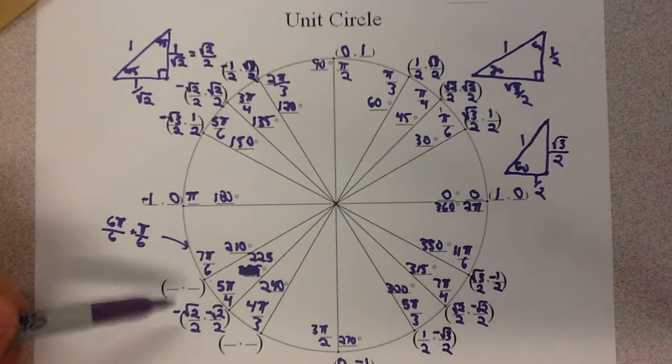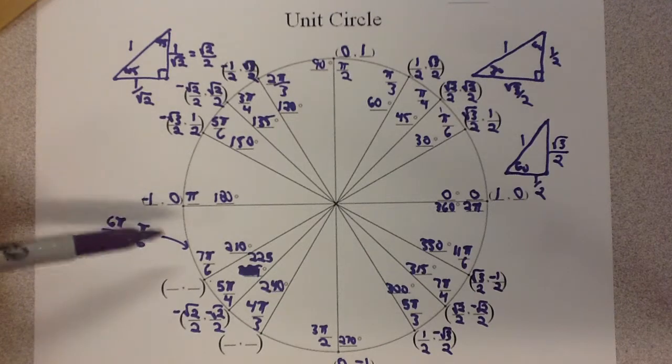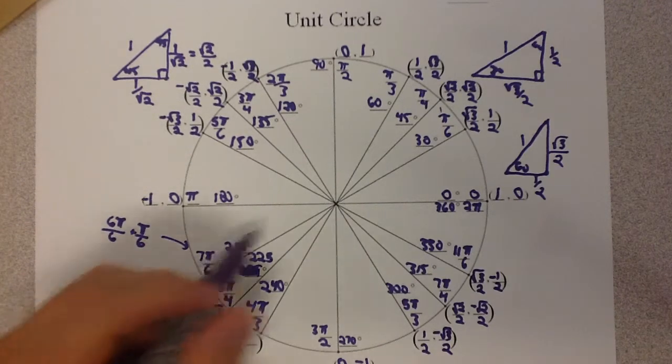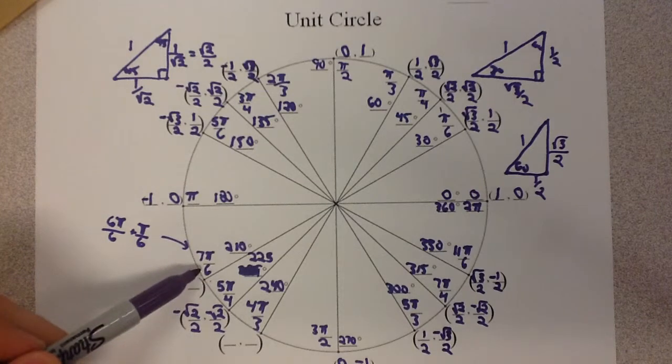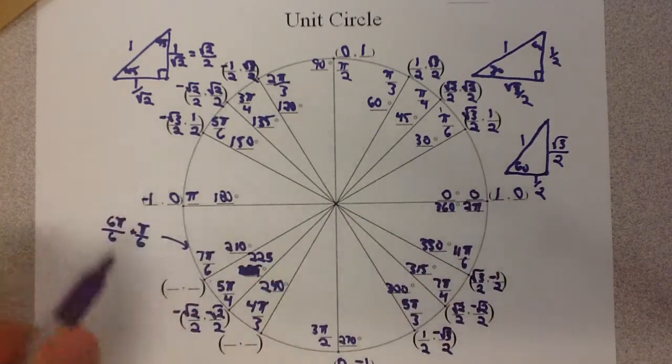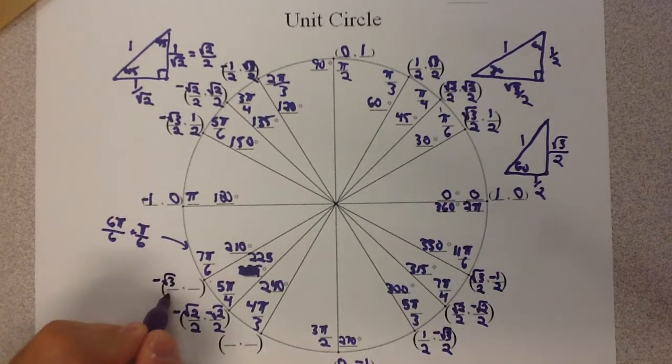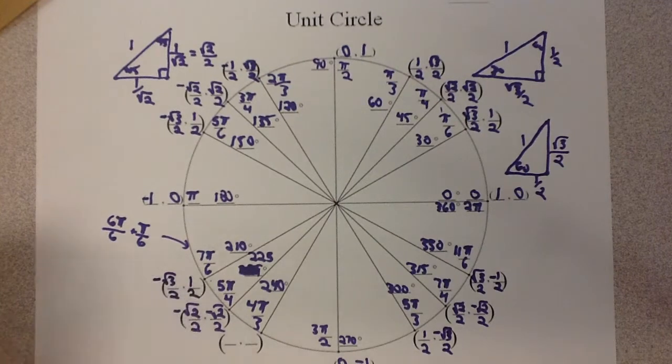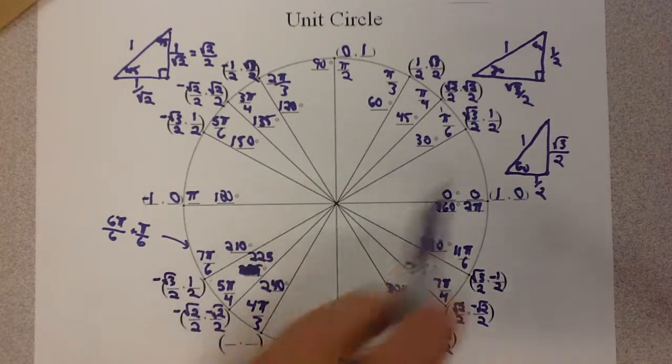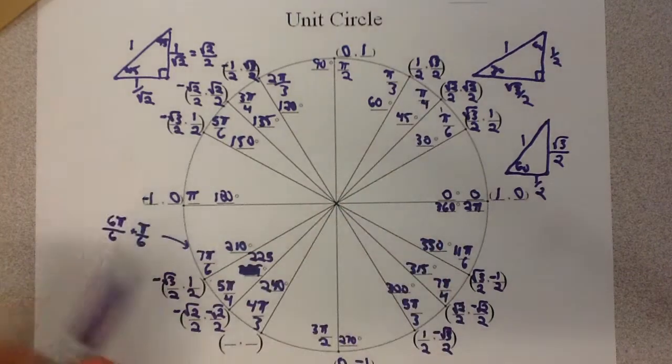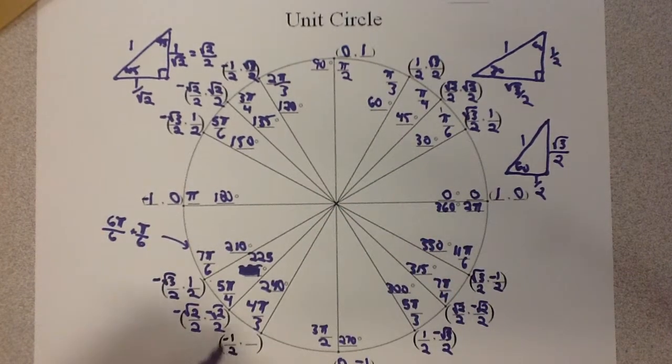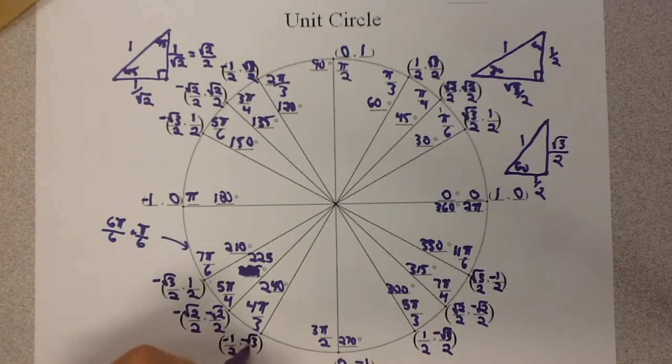And then, finally, over in quadrant 3, they're both going to be negative here. So, this is the π over 6 added to π. So, we're going to take both of these and make them negative. Negative root 3 over 2, negative 1 half. And this is our 60 degrees, so this is going to be these coordinates, both negative, negative 1 half, negative root 3 over 2.